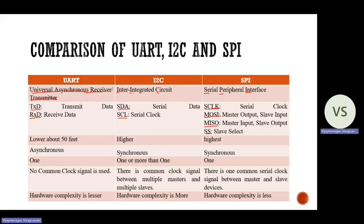The third point is related to distance — how much distance is covered. In UART, it covers about 50 feet. I2C covers a higher distance, and SPI covers the highest distance.